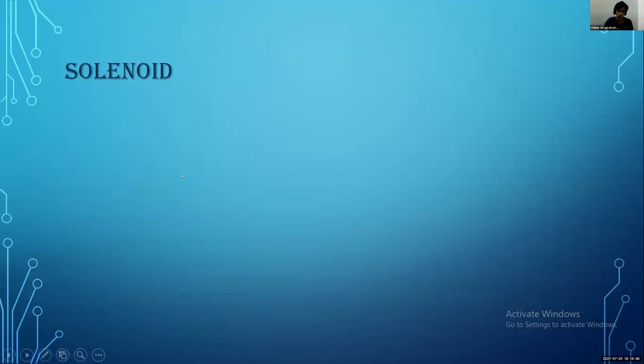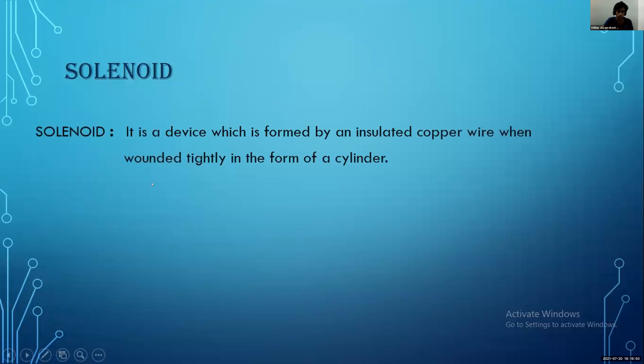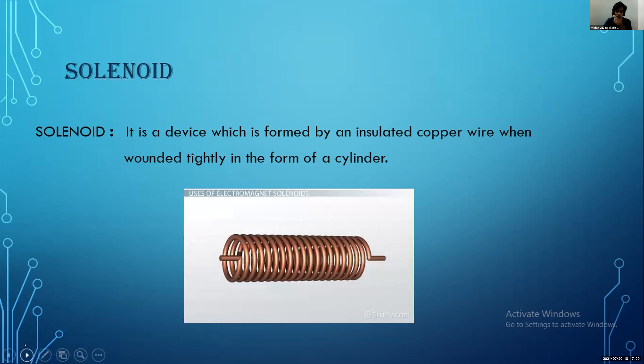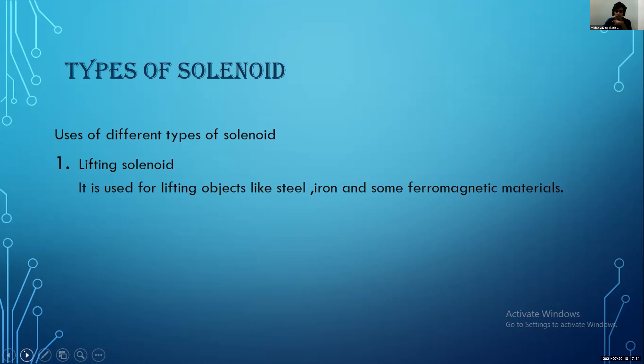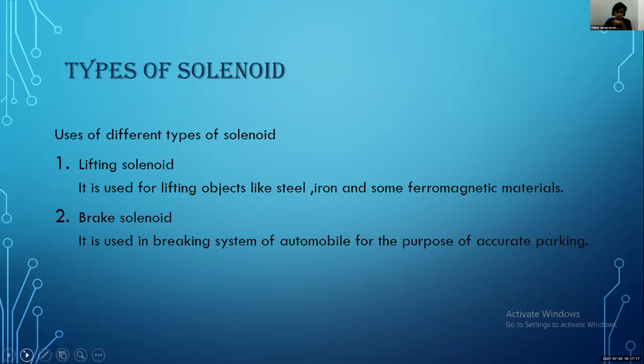Solenoid. It is a device which is formed by an insulated copper wire when wound tightly in the form of a cylinder. This is the image of a solenoid. Now the types of solenoid and uses of it.